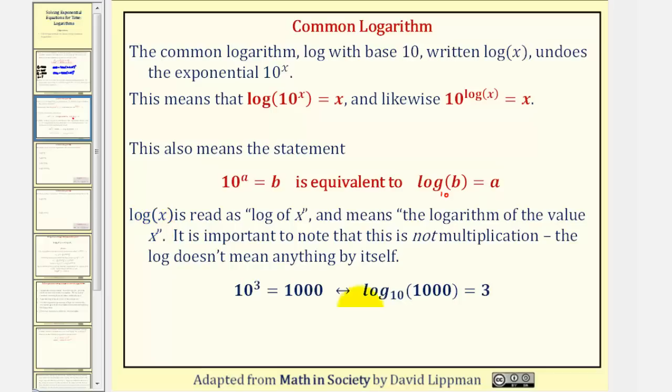For one more example, 10³ = 1,000 is equivalent to log₁₀(1000) = 3. Notice how I did include the base here for illustration purposes, but because this is base 10 or common log, we normally would not include this base. But to check this, we can always start with the base, 10³ must equal 1,000.